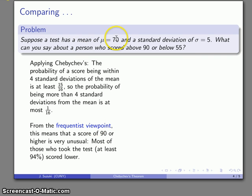So just from the mean, standard deviation, an actual score, plus Chebyshev's, we have a remarkable conclusion. Most of the people who took the test, at least 94% of the people who take that test, are going to score below this 90 value. So this person who scores a 90 is in a group that constitutes, at most, 6% of the test takers.